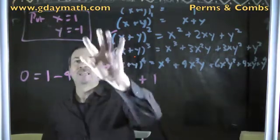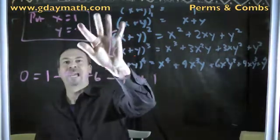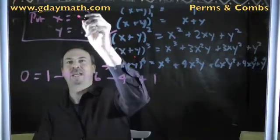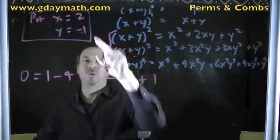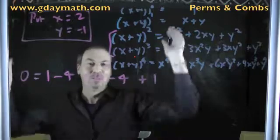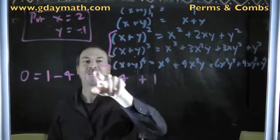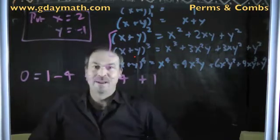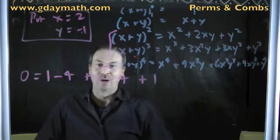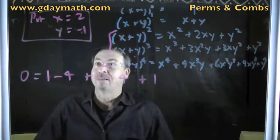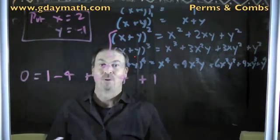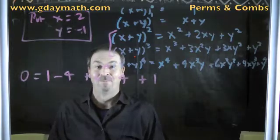In fact, you can put in all sorts of interesting numbers like 2 and negative 1, or 2 and 3, or whatever you want. Every time you do that, you'll get some curious, weird property of Pascal's triangle that would freak out your colleagues and classmates if you came in every day with a new property you discovered.